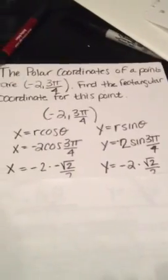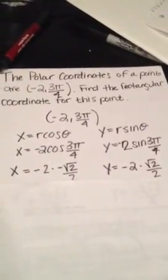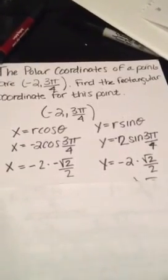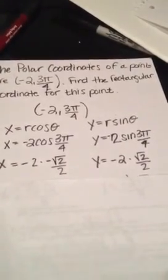So you multiply each of the problems by negative 2. So you have for x equals negative 2 times negative square root of 2 over 2, and then for y you have negative 2 times square root of 2 over 2.